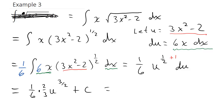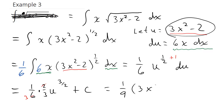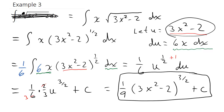Simplifying: 1/6 times 2/3 — the 6 and 2 cancel to give 1/9. My final answer can't stay in terms of u, so I substitute back: (1/9)(3x squared minus 2) to the 3/2, plus c.